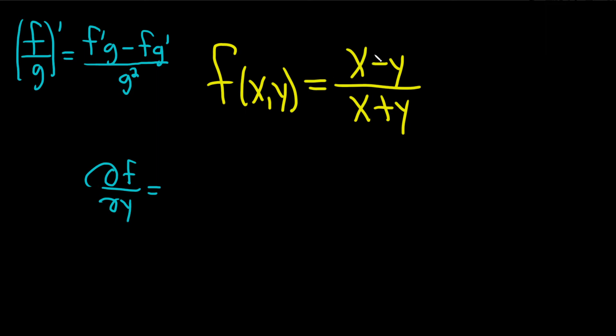In particular, x is a constant so its derivative is zero. So when we take the derivative of the top we'll just get negative one, that's the derivative of negative y, times the bottom.